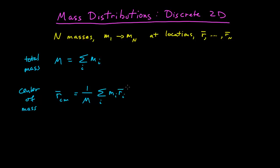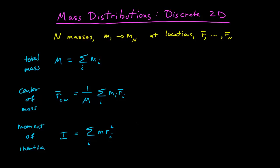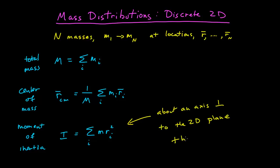Our moment of inertia is given by the sum over all objects of m sub i times r sub i squared. But we have to qualify this — what moment of inertia are we talking about? This is the moment of inertia about an axis perpendicular to the two-dimensional plane, through the origin, (0, 0).